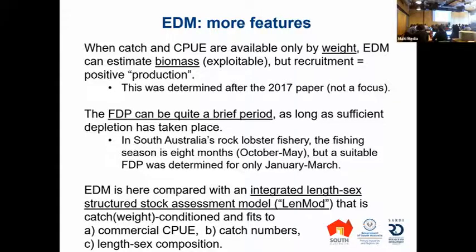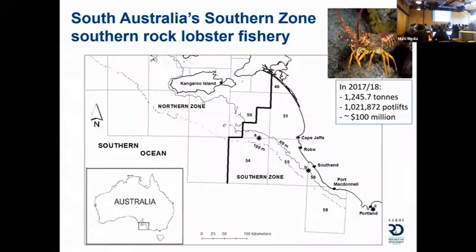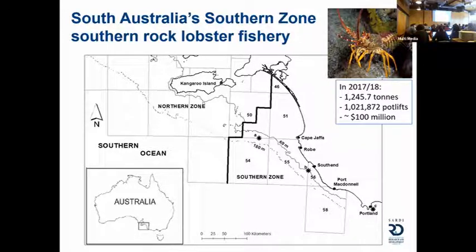This is contrasted and validated to some extent with a model referred to as LENMOD, which has been used for several years in Tasmania, Victoria, and South Australia for stock assessments. It's a length-sex structured model that fits to length-sex composition data, total commercial catch in numbers, and commercial CPUE in weight. It's catch-conditioned as well, using the Pope's approximation. The study area is a 20-kilometer shelf between Port MacDonald and Cape Zephyr in South Australia, which drops off quite deep and has a lot of Southern Rock Lobster.